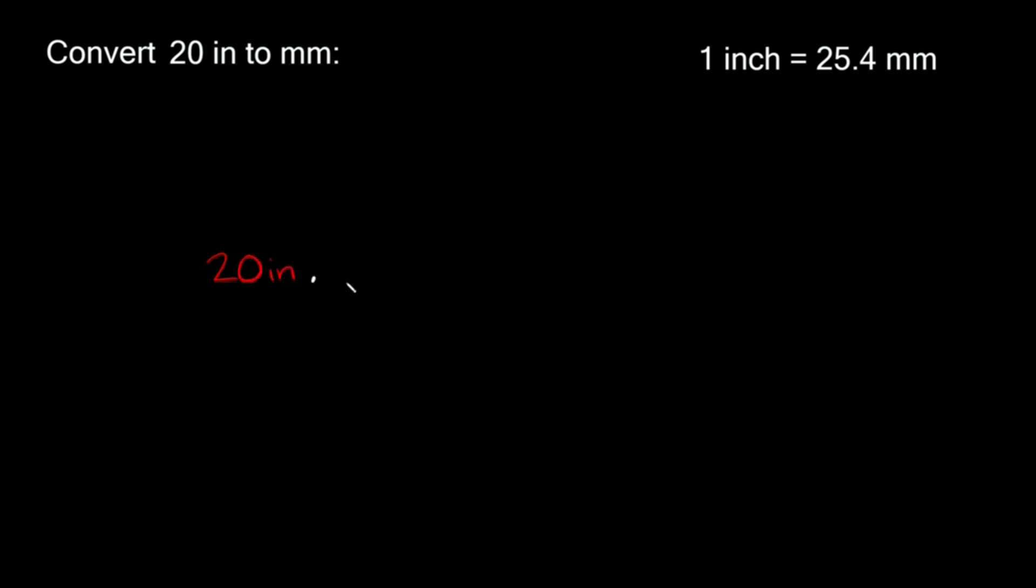Next, we're going to multiply by a fraction. In this fraction we're going to put your conversion. But how do you know what goes on top and what goes on the bottom?